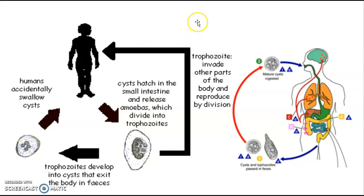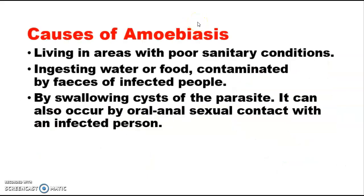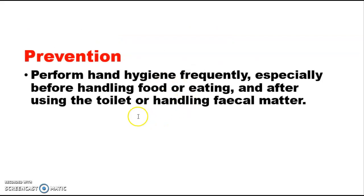Amoebiasis is mostly found in areas with poor sanitation conditions, where people ingest water or food contaminated by feces of infected persons, or by swallowing cysts of the parasite. It can also occur through oral and sexual contact with an infected person. For prevention, perform hand hygiene frequently — especially before handling food or eating, and after using the toilet or handling fecal matter — washing hands with soap for at least 20 seconds.